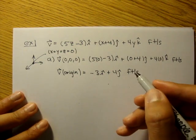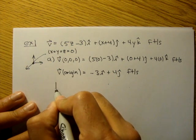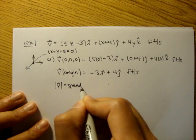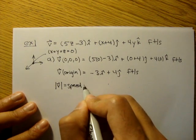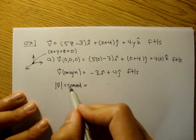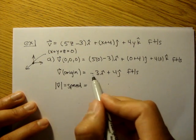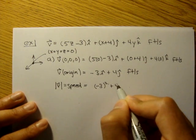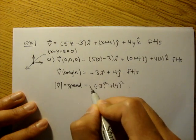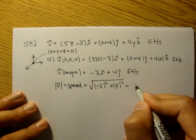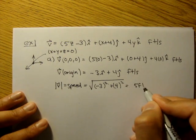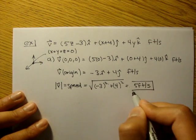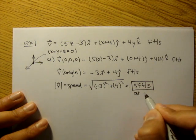Now let's find the speed, or the magnitude. The magnitude of the velocity field is equal to the speed. You know how to find magnitudes — square both components, add them, and then take the square root. So it's the square root of negative 3 squared plus 4 squared, which gives us 5 feet per second. So that's the speed at the origin.